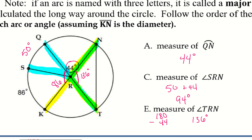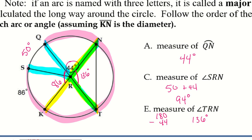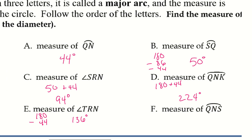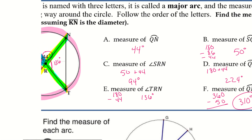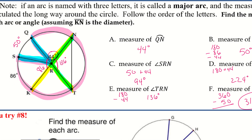The last one — arc QNS — goes Q to N and then all the way to S: it's the majority of the circle, everything except one slice. The entire circle is 360 degrees. The only part I'm not looking at is the 50-degree arc, so 360 minus 50 gives me 310 degrees. We just take what we know and slowly add in the information as we get it.